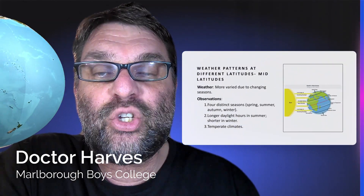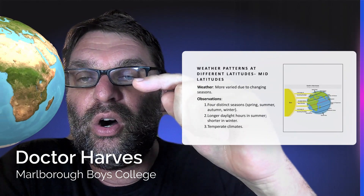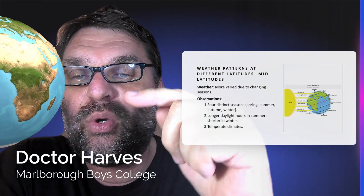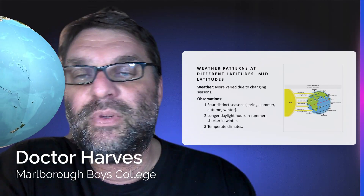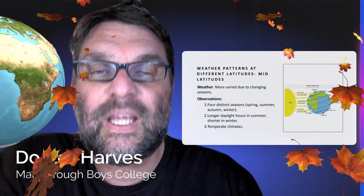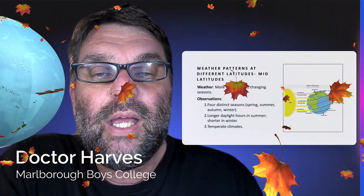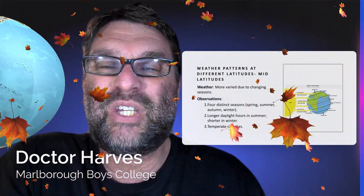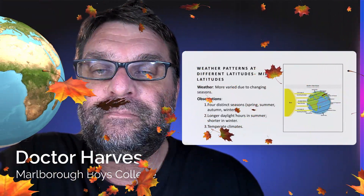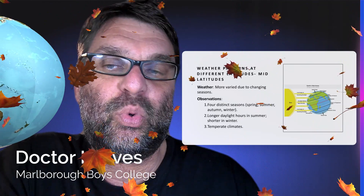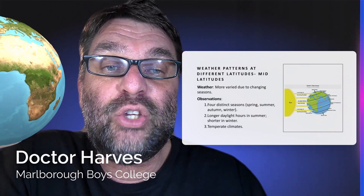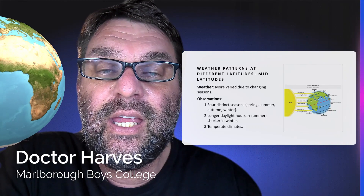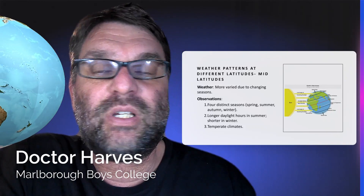Then we have the mid-latitudes — that's where we are. This zone lies between the Tropic of Cancer and the north pole in the northern hemisphere, and between the Tropic of Capricorn and the south pole in the south. There are four distinct seasons: spring, summer, autumn, and winter, which we experience in New Zealand. Daylight hours are longer in summer and shorter in winter. Temperatures are more temperate, ranging from around minus 10 to 30 degrees Celsius. The reason is that sunlight hits at a lower angle, giving less intensity per unit area, so temperatures are slightly decreased.